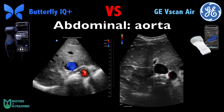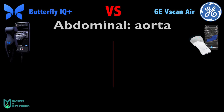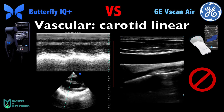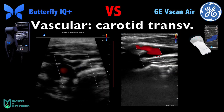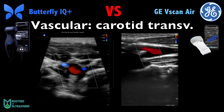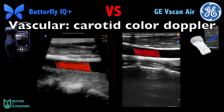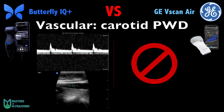Here you can see that both Dopplers are pretty much the same. The Butterfly IQ has M-mode — here shown on a carotid image and a cardiac image — while the Vscan has only B-mode. This is a transverse carotid color Doppler, and you can see that both are pretty similar. This also shows that the Butterfly IQ has Pulse Wave Doppler, which the Vscan does not have.